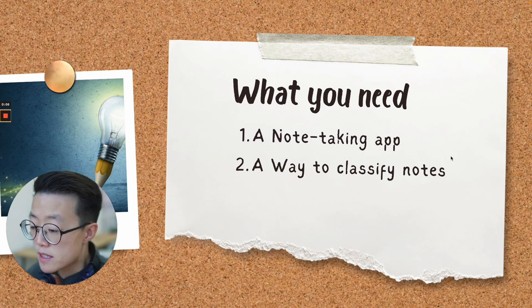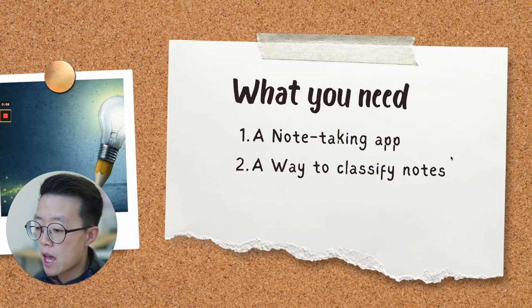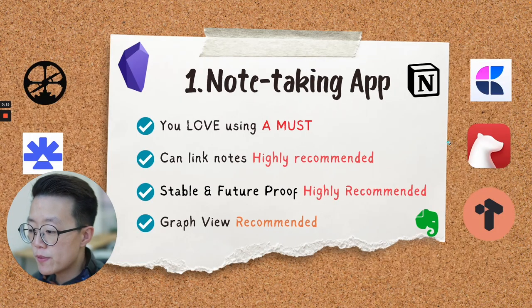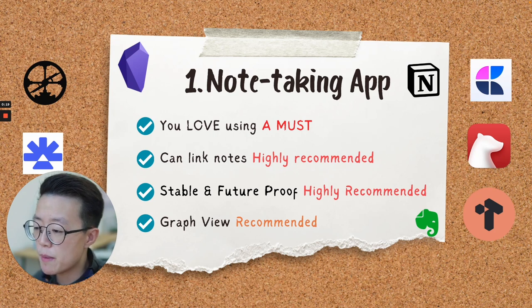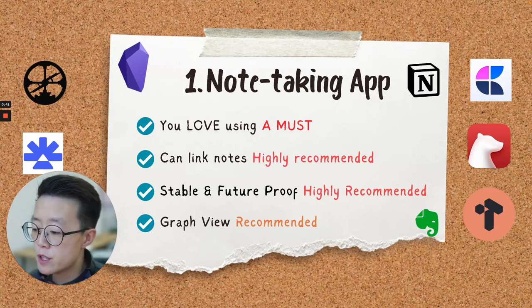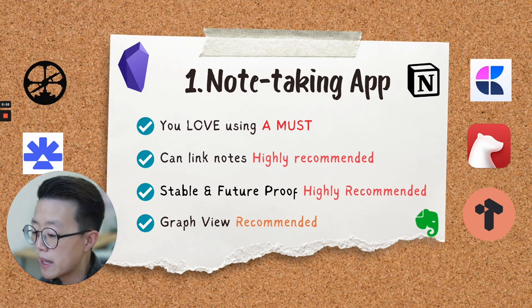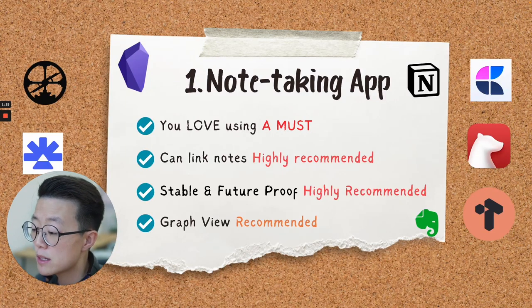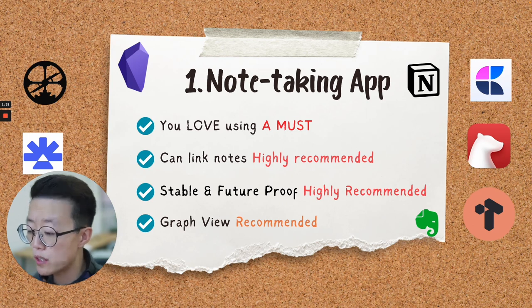Now that we know how the Productive Thinking system works, I'd like to show you how to set it up in any application. The following demos are not meant to be comprehensive tutorials, but just to give you an idea of how this could be done in real life. All you need is a note-taking app and a way to classify notes within it. There are tons of apps in the market and all of them are great in their own ways, but the most important thing is that you have to love using the app. It would be very beneficial if you can link notes together, so I would highly recommend using an app with this functionality. You're also going to take tons of notes, so you need something you can trust.